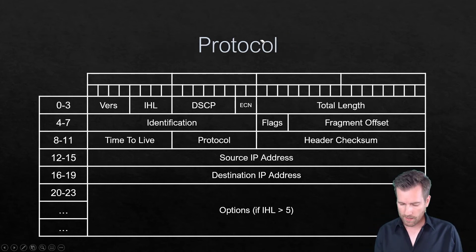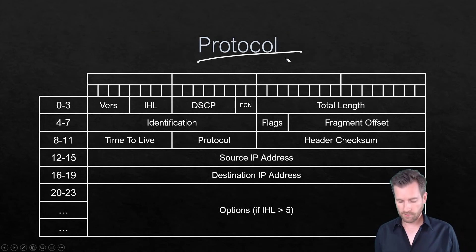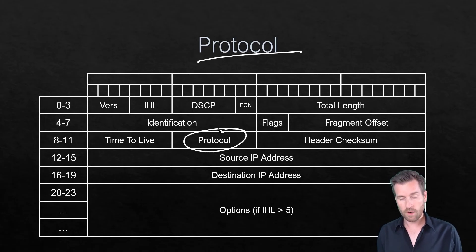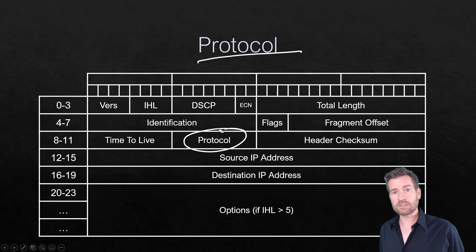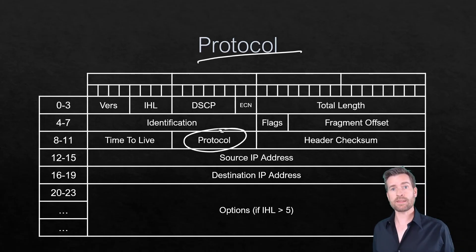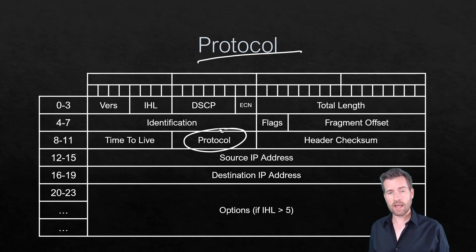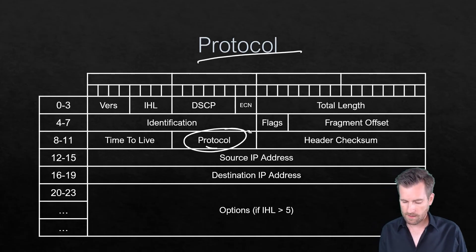Next up is the Protocol field, defined with 8 bits (one byte). It identifies what is within the payload — in other words, what type of information is being transferred.